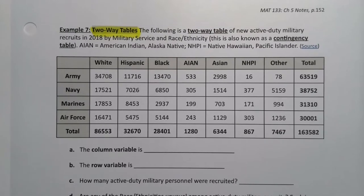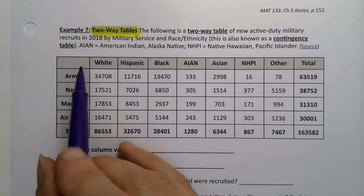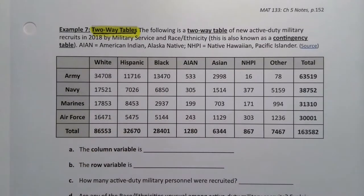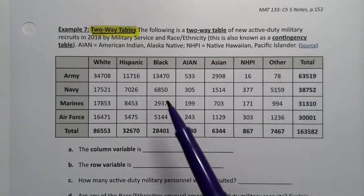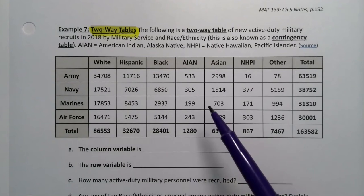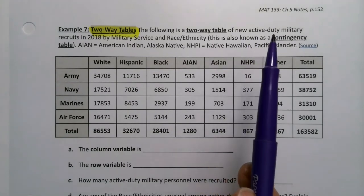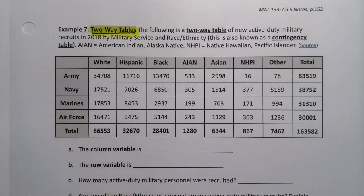We are going to put together all of our skills, know-how, and definitions in one more example. And it's a very important example because it involves two-way tables. Now, what is a two-way table? Well, you can kind of see it as we look through it. A two-way table is a table that has rows and column variables for a particular data set. This following data set is the New Active Duty Military Recruits in 2018 by Military Service and Race Ethnicity.